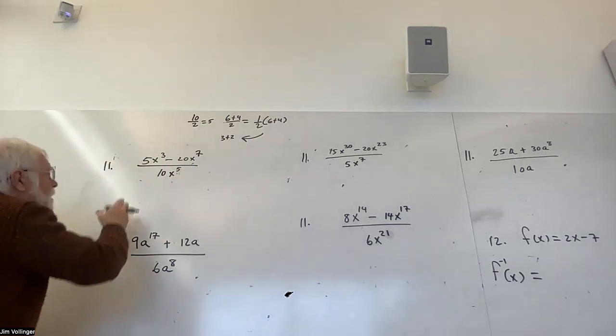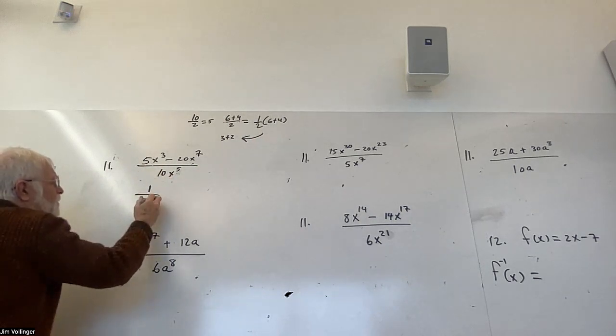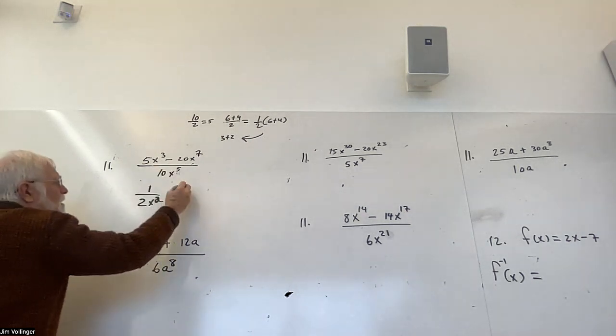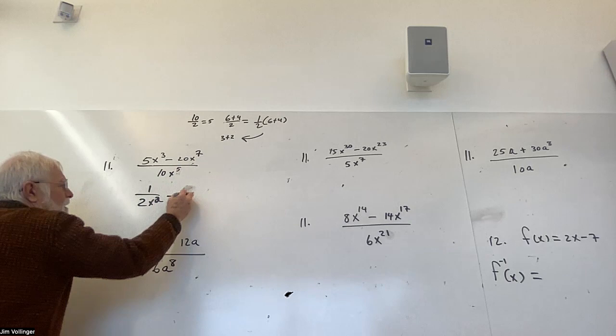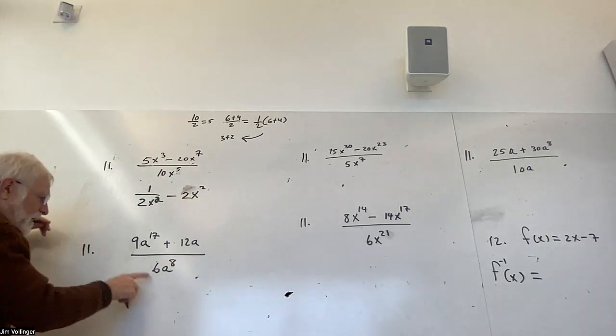Alright, so reducing, 5 tenths is a half, and 3 and 5, 2 more in the denominator. I wrote 3, I don't know why, 2 more in the denominator. And we're subtracting, 20 divided by 10 is 2, and x to the 7th over x to the 5th, so I guess I'll write it like this. There are 2 more in the numerator, 2 more factors in the numerator.